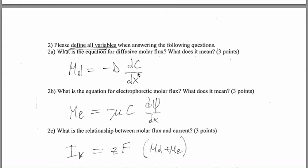So, inside and outside the membrane, for example, there's a diffusion current and if there's more kind of ion inside the cell, you will have molar flux out that goes outside the cell. The second, what is the equation for electrophoretic molar flux? What does it mean?